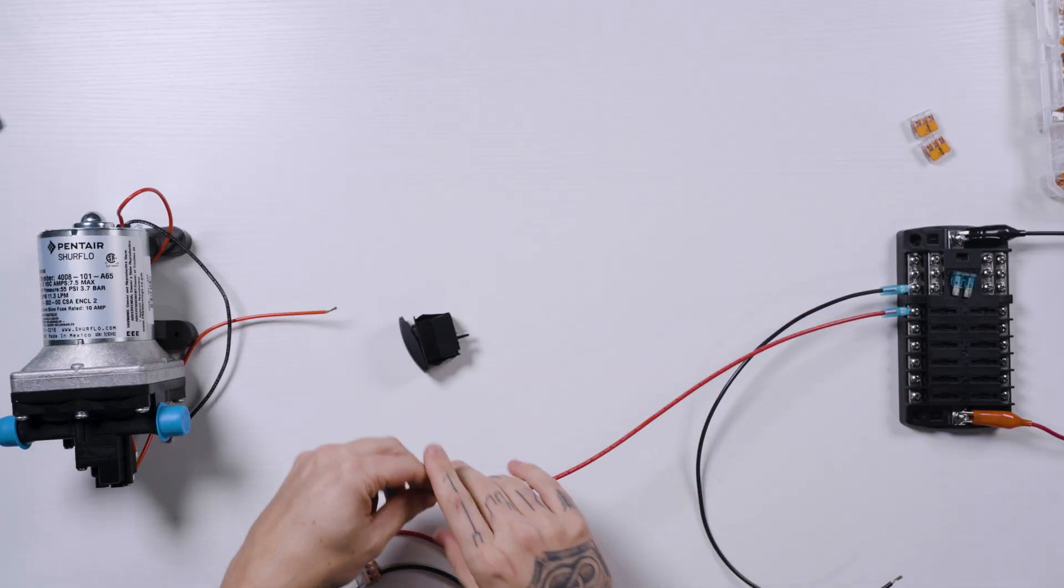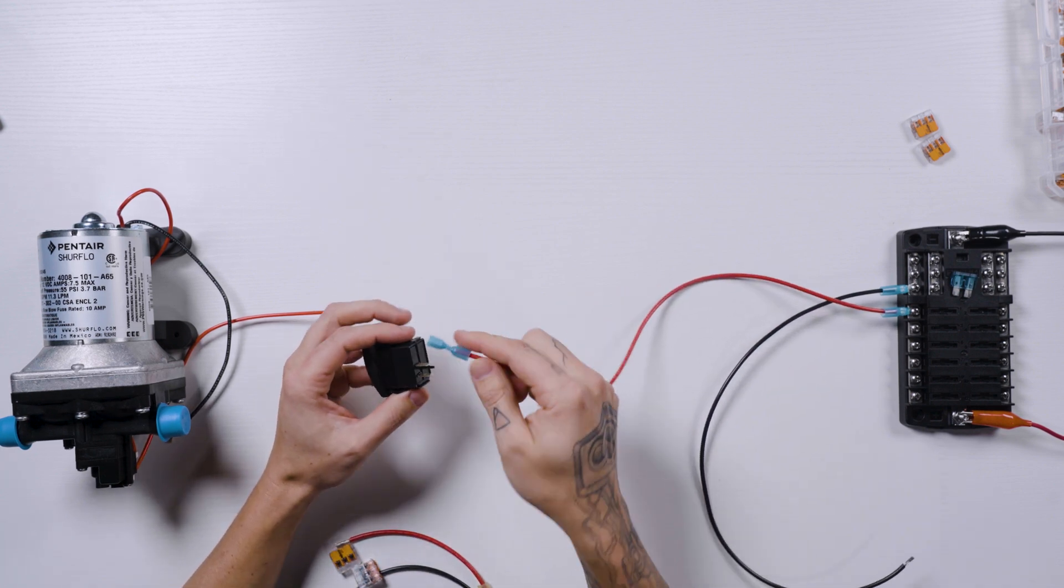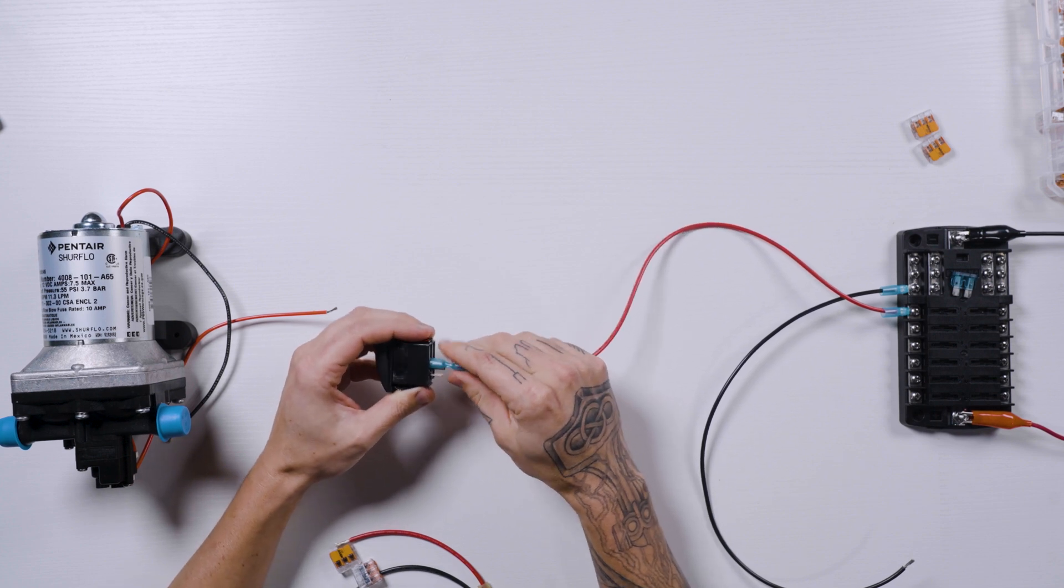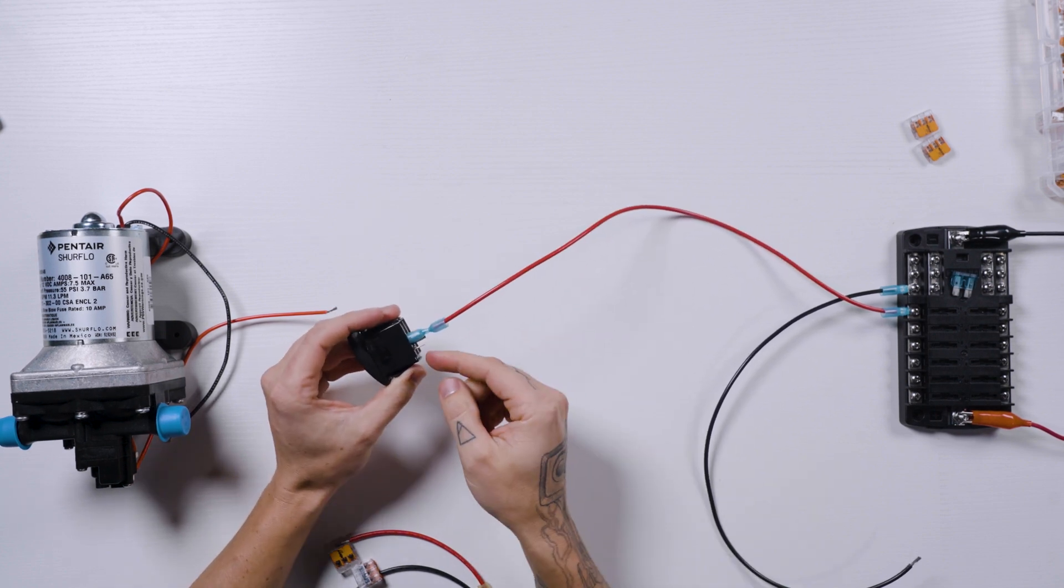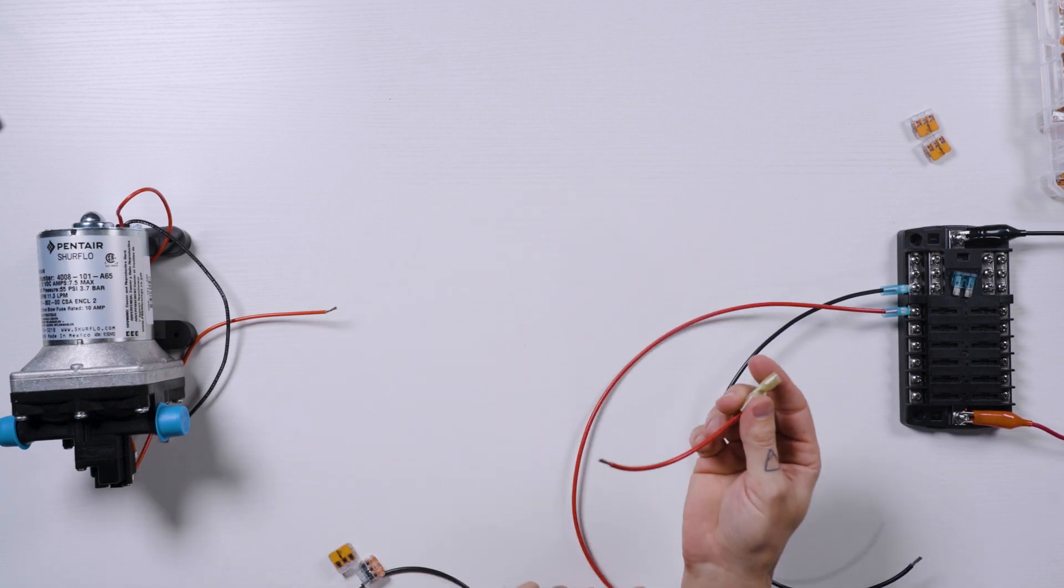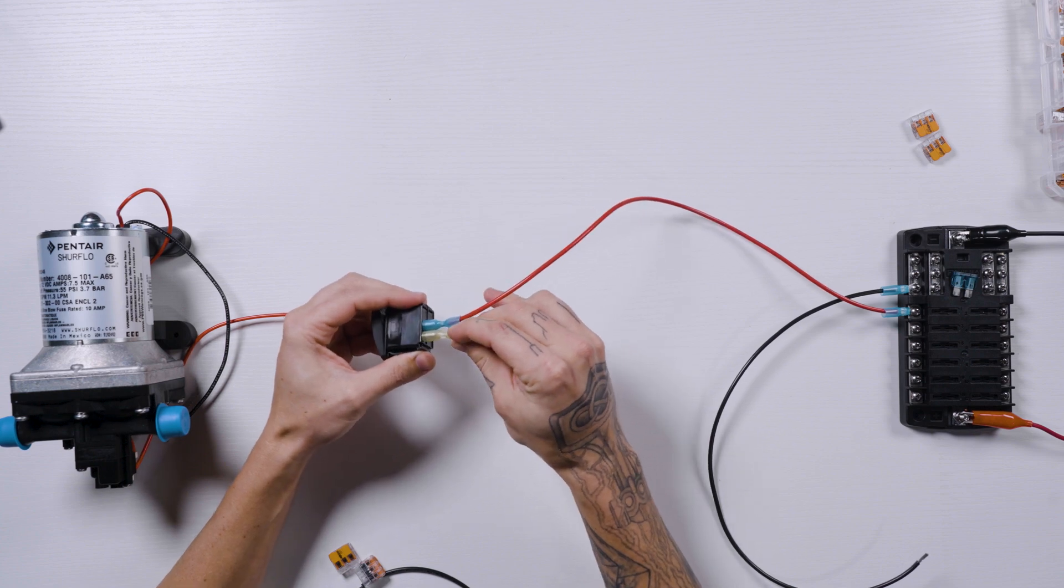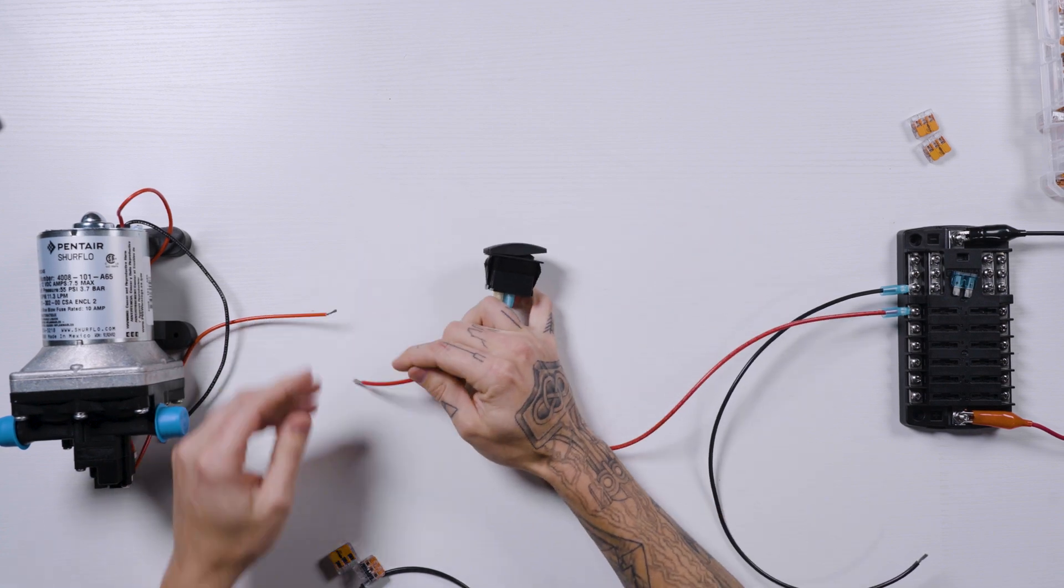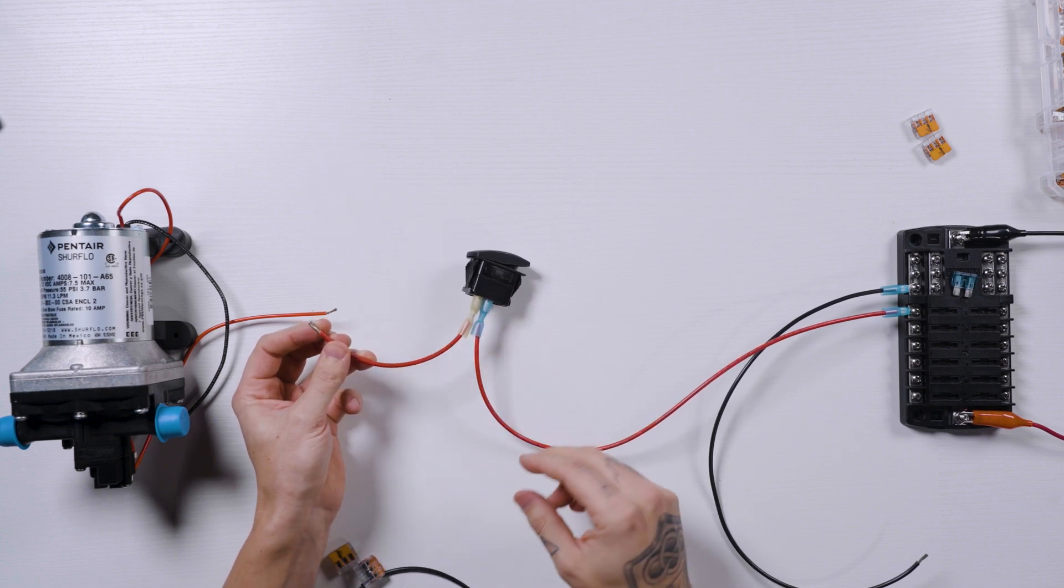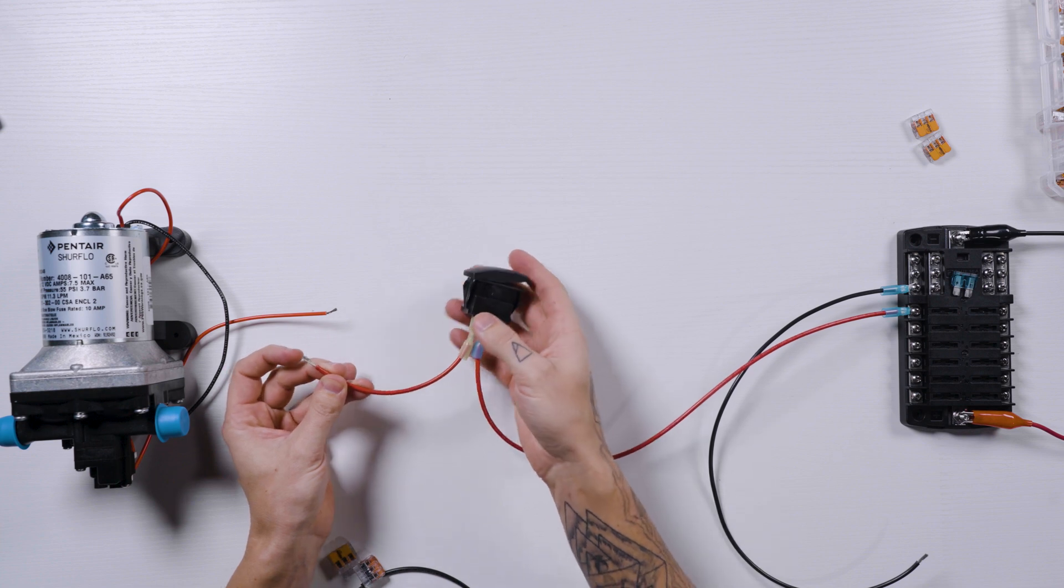We have the positive wire coming off of the fuse block here with a spade connector crimped on the end. That's going to go to this terminal here of this switch. For this particular switch, it doesn't really matter which one you connect it to. The other side, you're going to run the positive wire from the switch over to the water pump, and this wire can be as long as you need it to be. Same with this one. You just want to put the switch in a fairly accessible location.